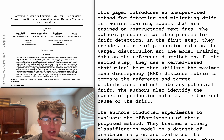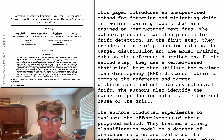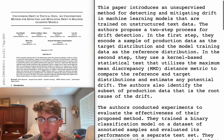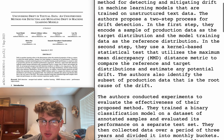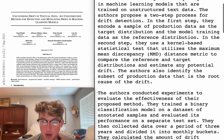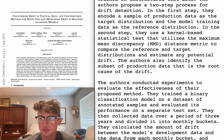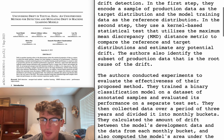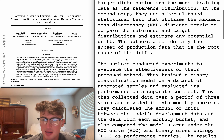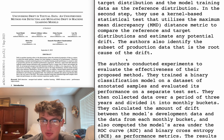Uncovering drift in textual data - an unsupervised method for detecting and mitigating drift in machine learning models. Amazon paper. Two-step process for drift detection. In the first step, they encode a sample of production data as the target distribution and the model training data as the reference distribution. In the second step, they use a kernel-based statistical test that utilizes the maximum mean discrepancy distance metric to compare the reference and target distributions and estimate any potential drift.